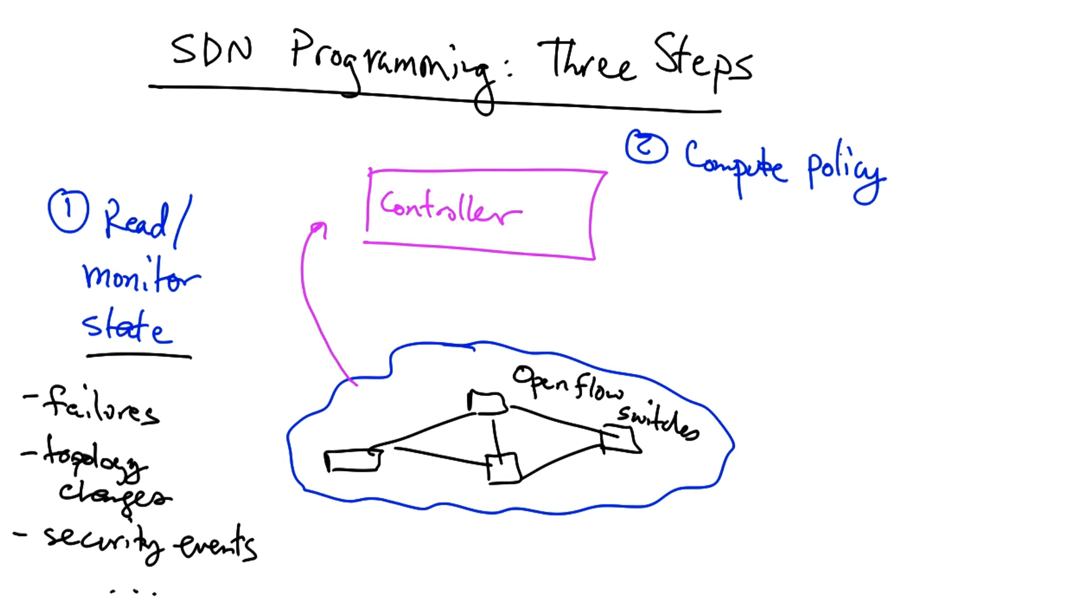The second step is to compute the policy based on the state that the controller sees from the network. This is effectively what we talked about last time as the role of the decision plane in deciding what the forwarding behavior of the network should be in response to various states that it reads from the network switches.